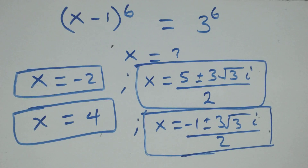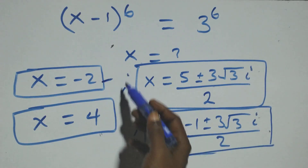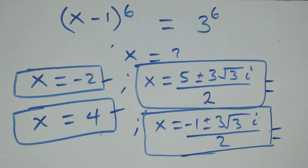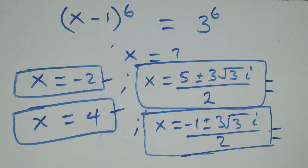All together in this problem we have 6 solutions: 2 real solutions, 2 complex solutions from the first case, and 2 complex solutions from the second case. Thank you for watching — don't forget to subscribe for more videos, turn on the notification bell, share this video, give it a thumbs up, and put your comment. See you next class and bye for now.